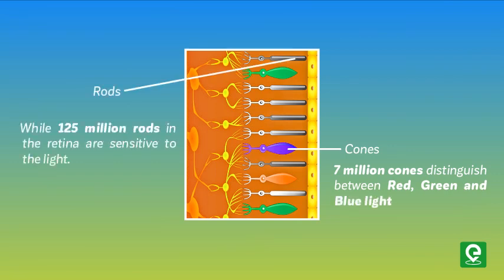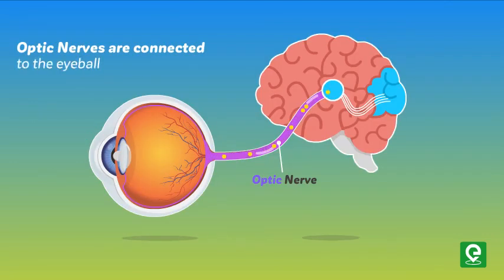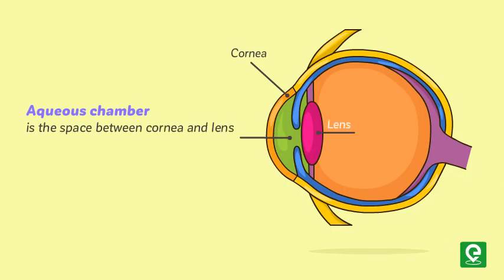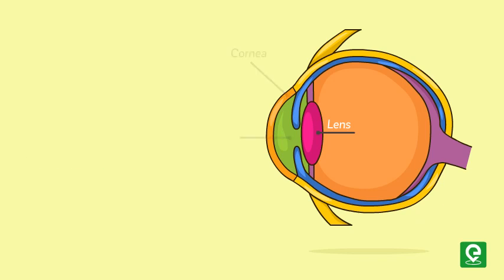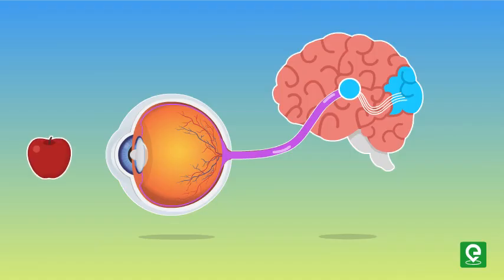Optic nerves are connected to the eyeball and send signals to the brain. The aqueous chamber is the space between the cornea and lens, containing a thin watery fluid called aqueous humor. The space between the lens and the retina is called the vitreous chamber and is filled with vitreous humor.